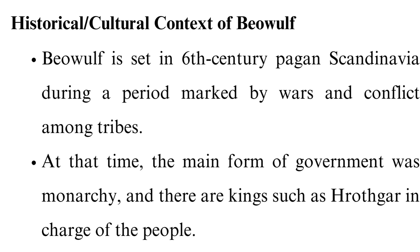Historical and cultural context: Beowulf is set in 6th-century pagan Scandinavia during a period marked by wars and conflict among tribes. The main form of government was monarchy, with kings such as Hrothgar in charge of the people. Many literary experts connect the story to a real Danish king named Hrothgar who ruled in the early 6th century. The Ravenswood battle mentioned in the poem also occurred in 510 AD. The era was also known as the Anglo-Saxon period, or the Dark Ages, since most of the literature is lost. However, Christianity was spreading, many regional authoritative bodies were formed, and some tribes were competing for resources.